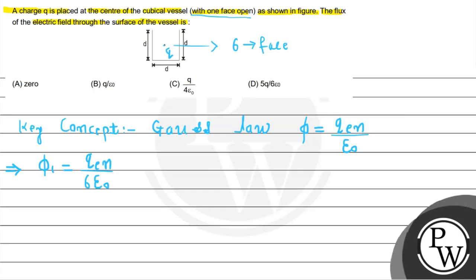Right? Because for that open surface, let me write down here. For open surface, electric field will be zero here. So remaining will be five, and for one we have already calculated.